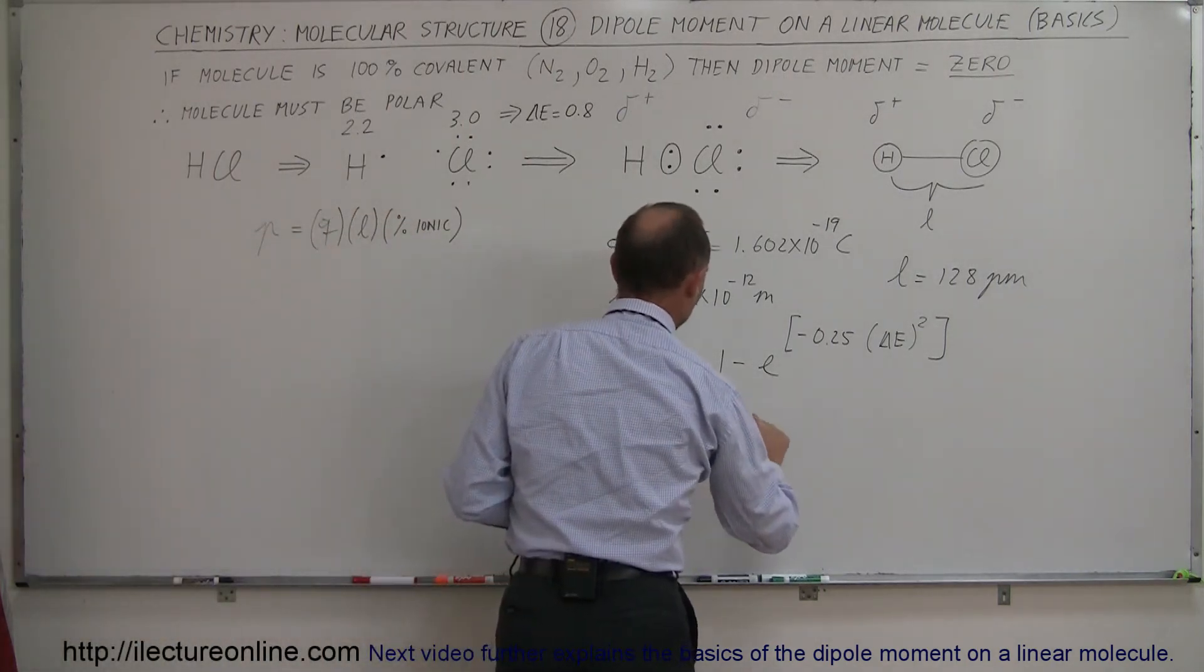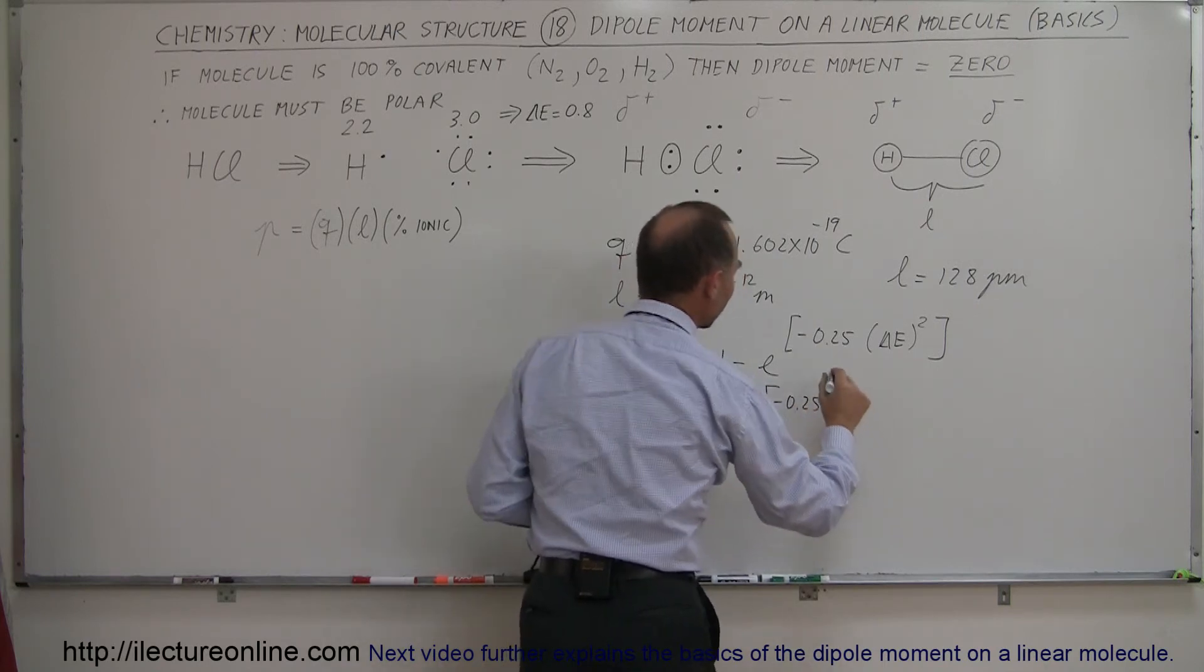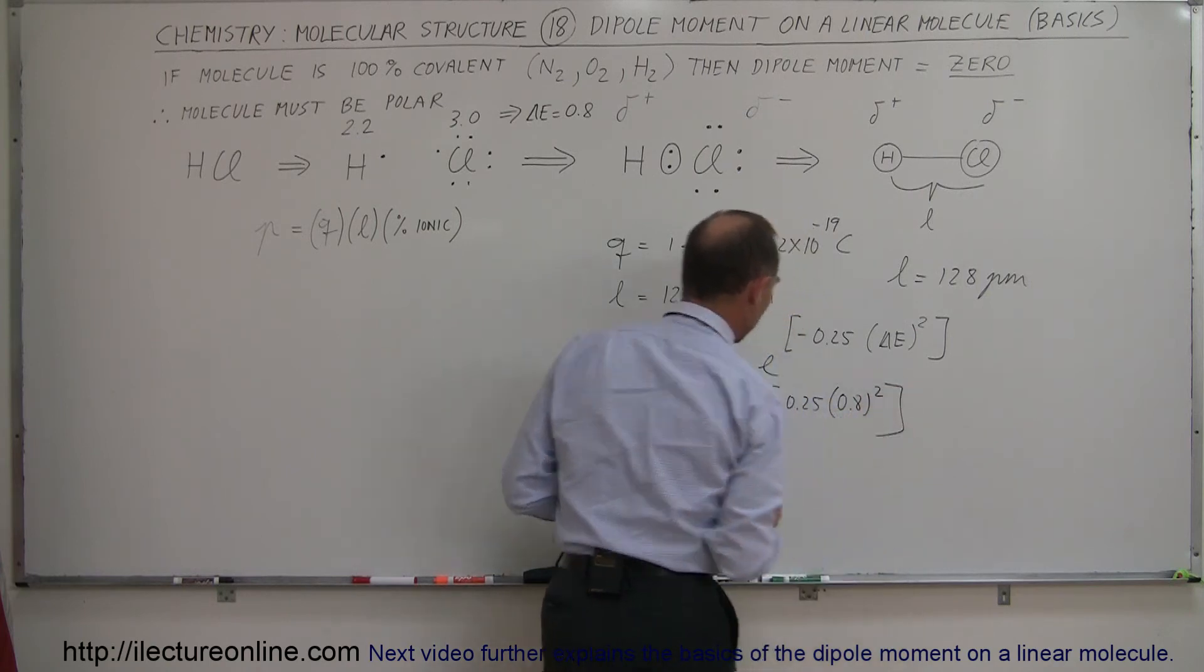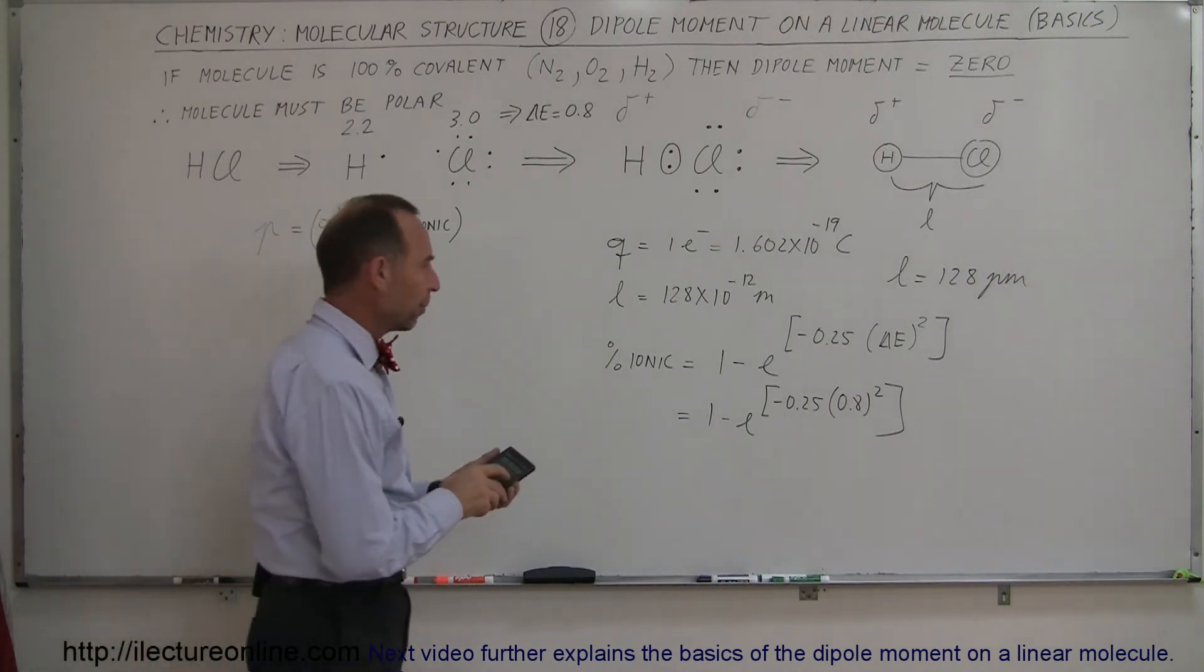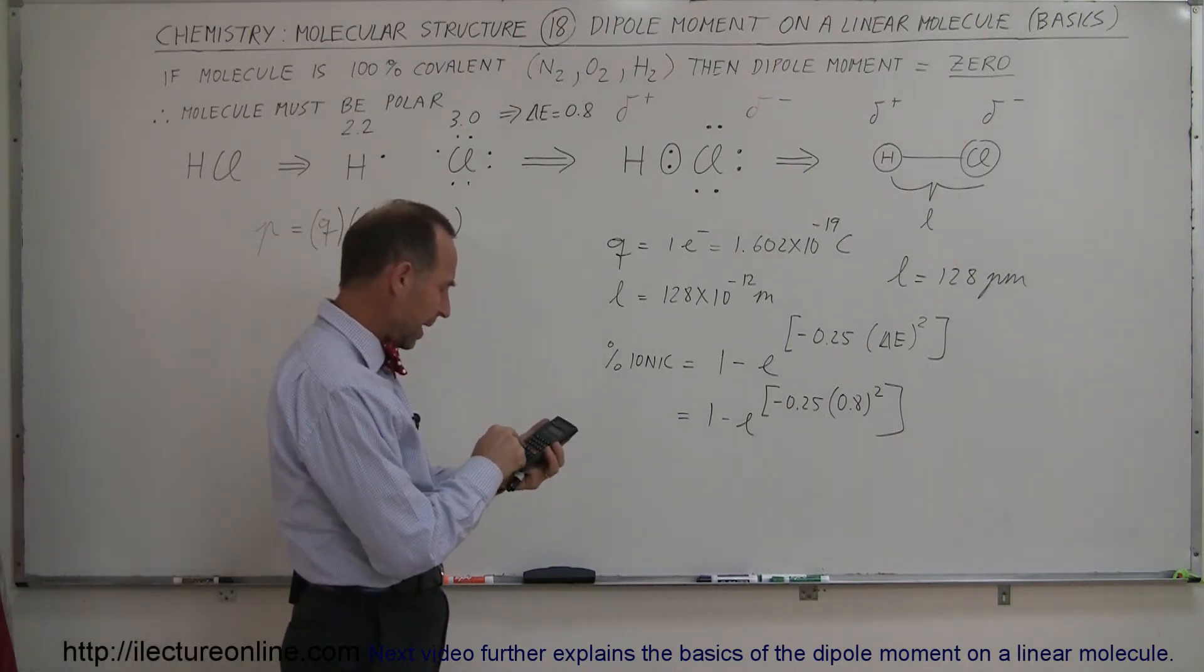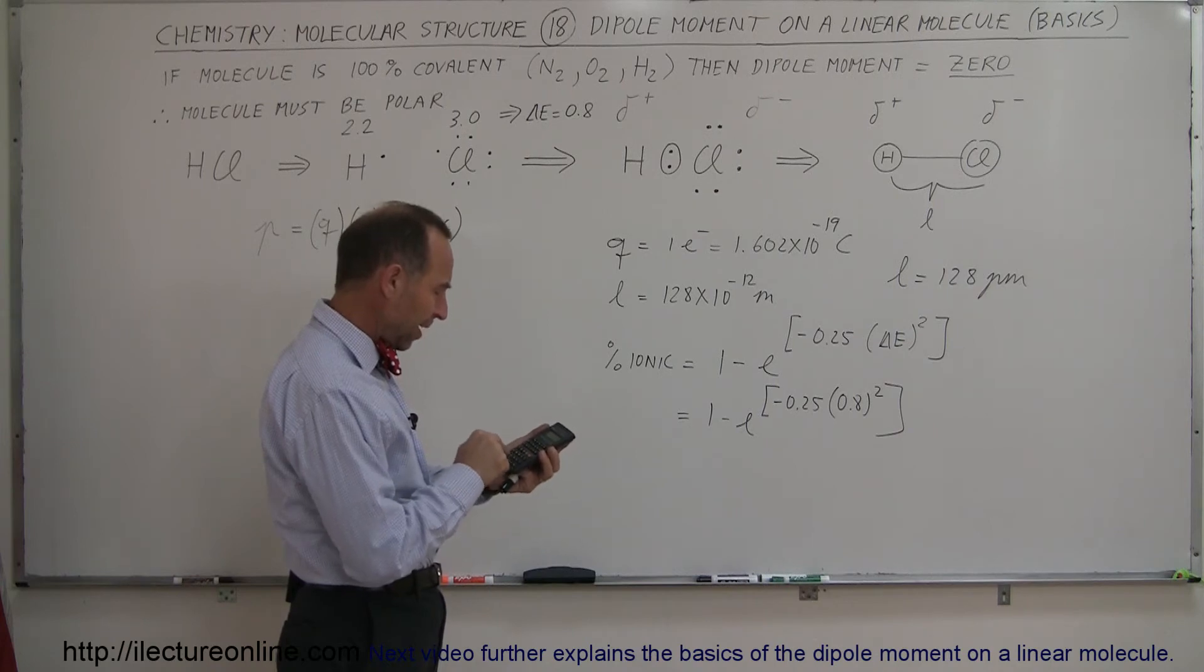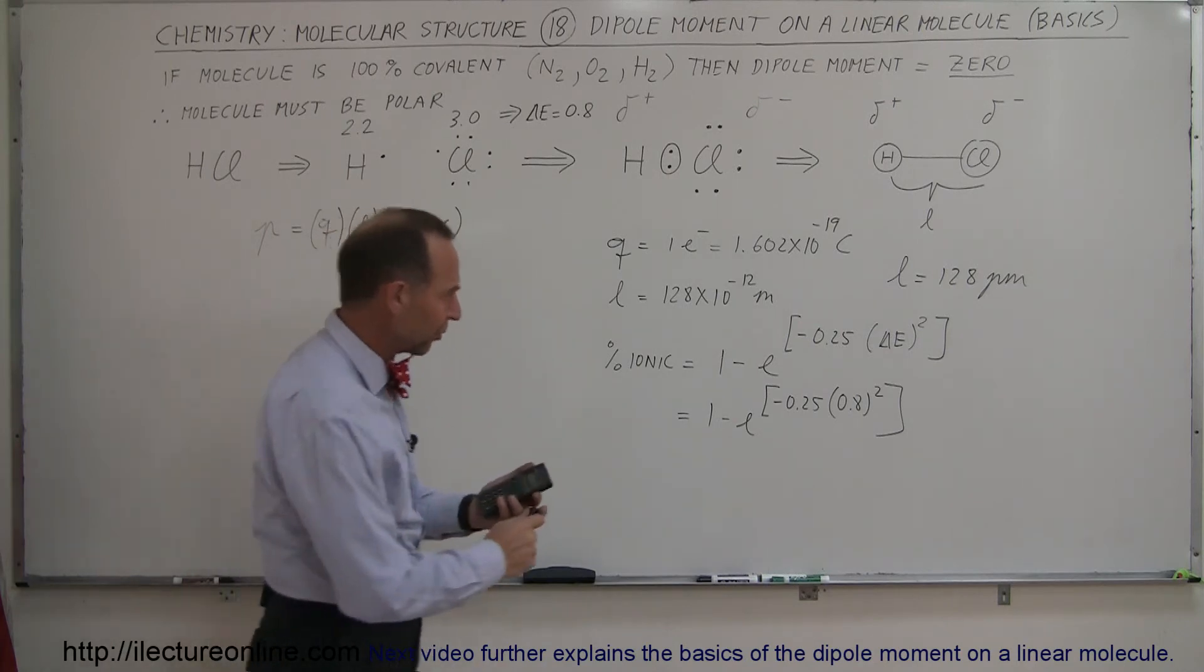So this is equal to 1 minus E raised to the minus 0.25 times the quantity 0.8 squared. For that, we need a calculator. So if we go 0.8 squared, 0.8, and we square that, then we multiply that times 0.25 and multiply that times the negative, and now we use that number as an exponent.